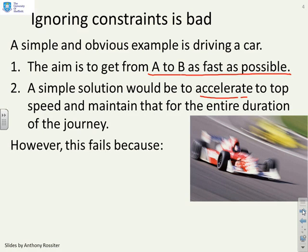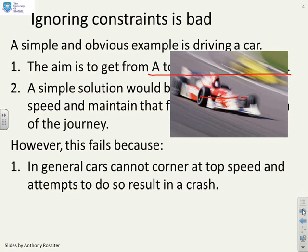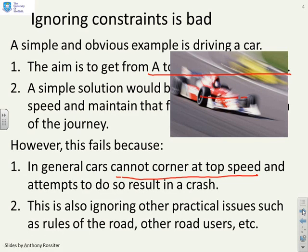However this strategy is going to fail. Why? In general, cars cannot corner at top speed and any attempts to do so will result in a crash. There are also other practical concerns on a real road such as other road users, the rules of the road and so on. The solution you get from an unconstrained optimization which says just go at top speed is clearly not feasible. You cannot implement it and therefore it's meaningless.